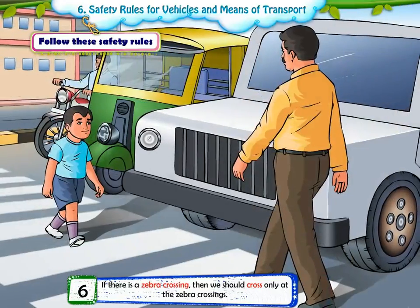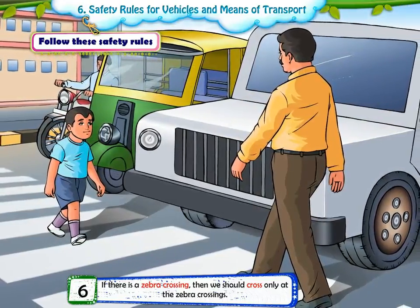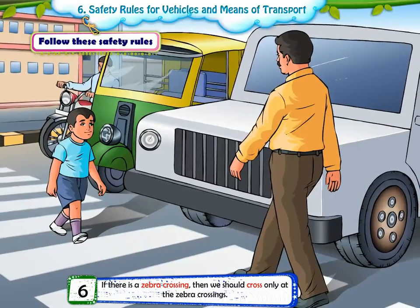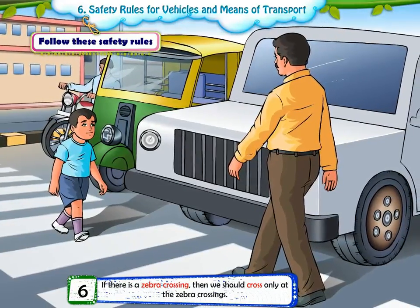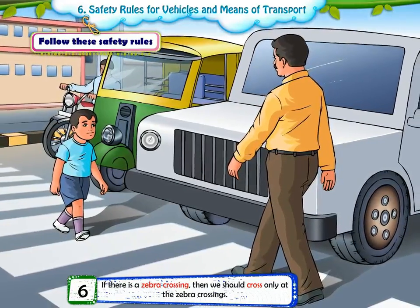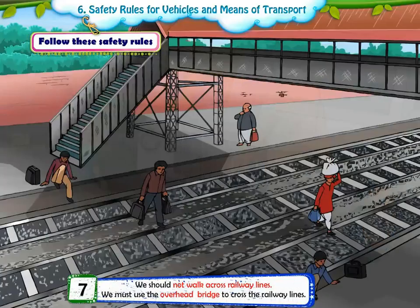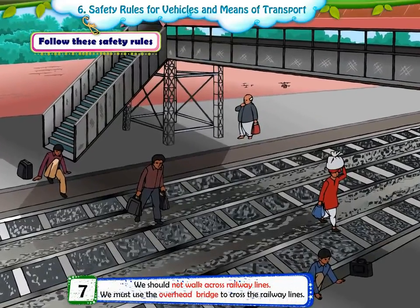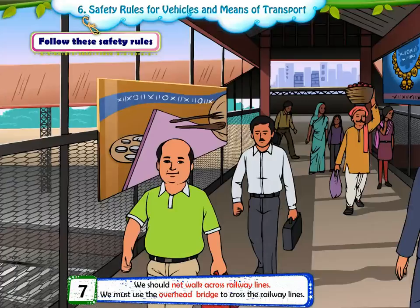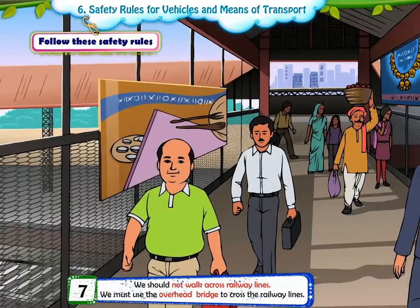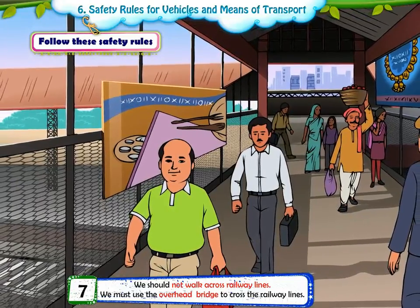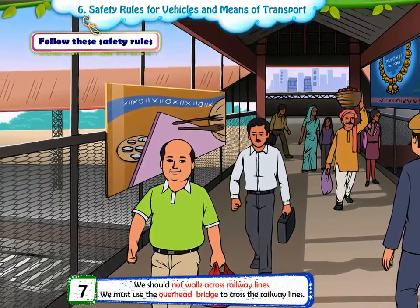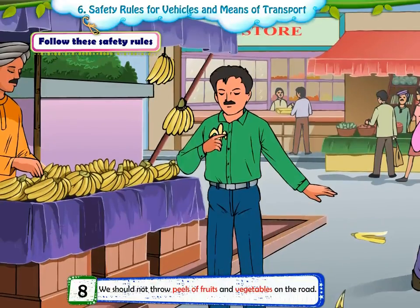6. If there is a zebra crossing, then we should cross only at the zebra crossings. 7. We should not walk across railway lines. We must use the overhead bridge to cross the railway lines.